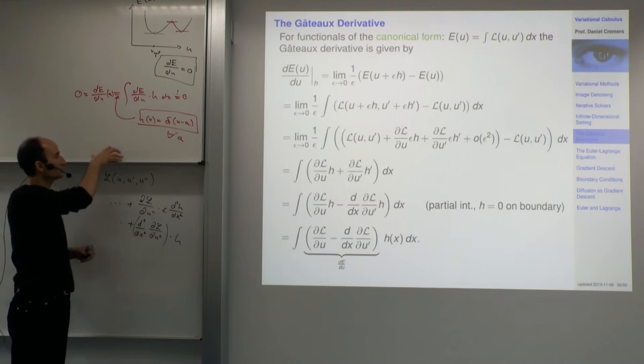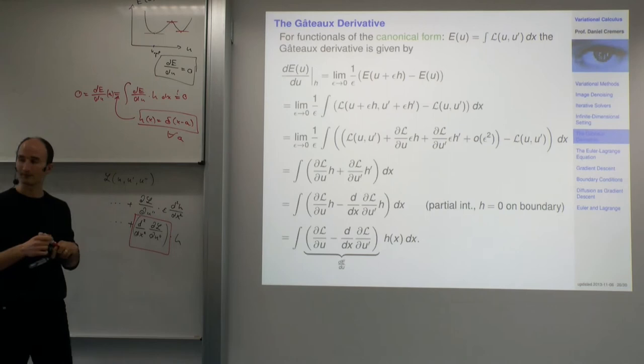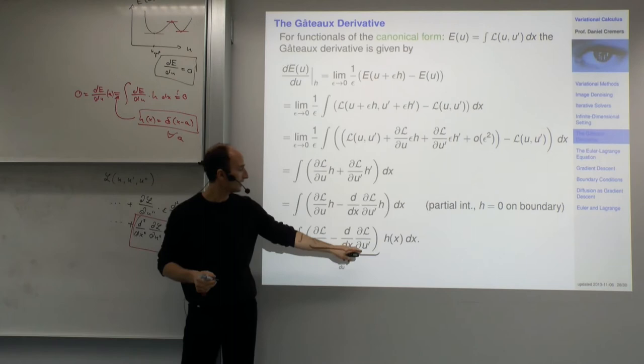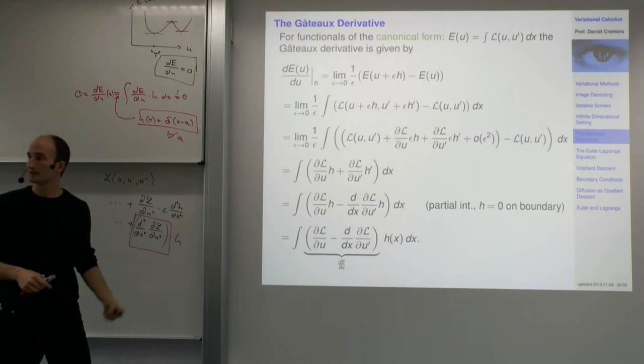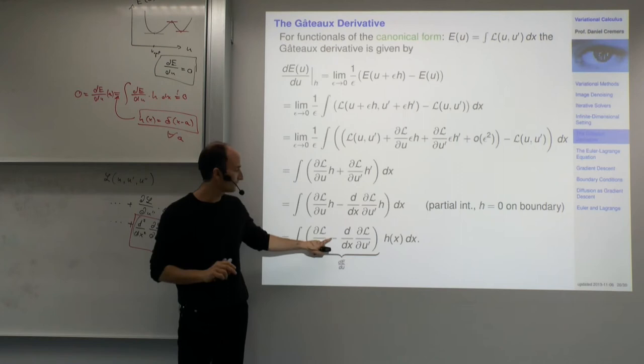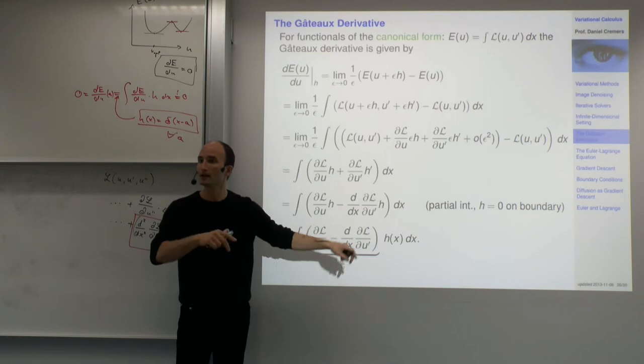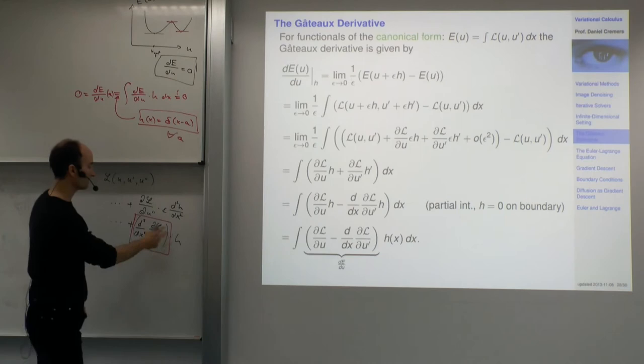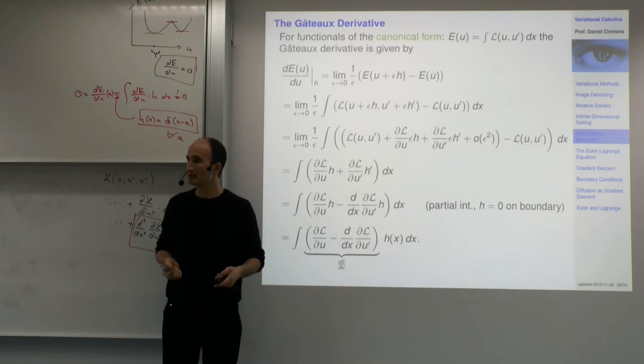In the Euler-Lagrange equation you get an additional term: d squared over dx squared of dL by du double prime. For higher orders you can derive this at home. Every higher-order derivative gives another sign change: minus d by dx, plus d squared by dx squared, minus, etc., because every integration by parts changes the sign.